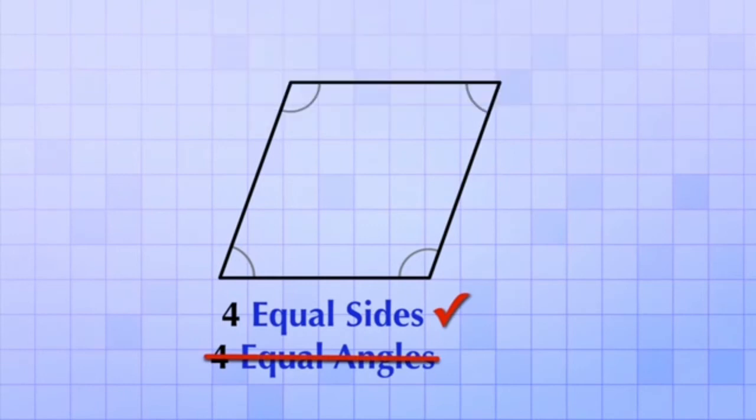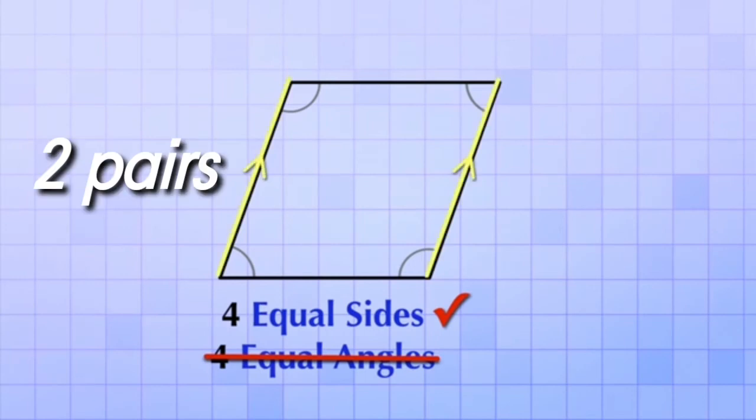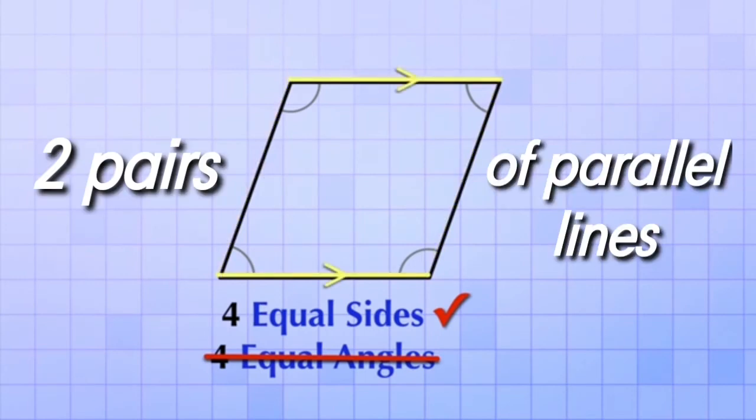And once again, just like the square and rectangle, the rhombus is made from two pairs of parallel sides. All right, now it's your turn to answer these questions.